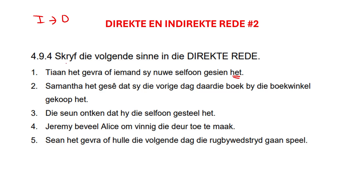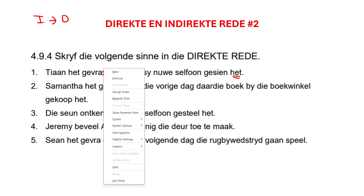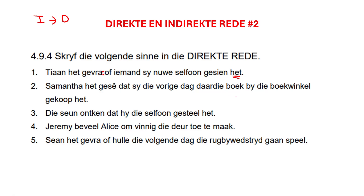So we say: Tian het gevra — we put the colon. Then remember, the 'of' and the 'dat' is part of our change from direct to indirect. Remember this part? So now we take it out, we don't need it anymore.